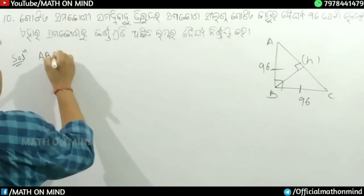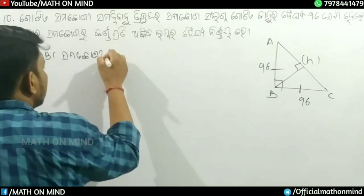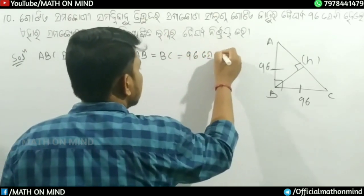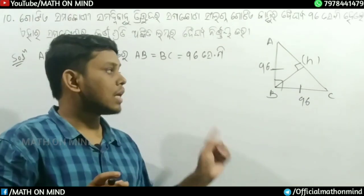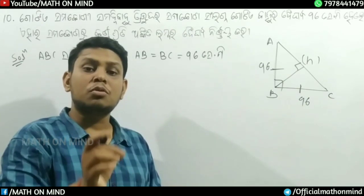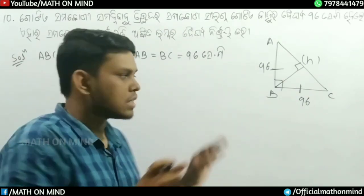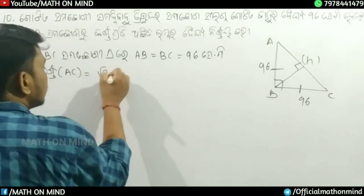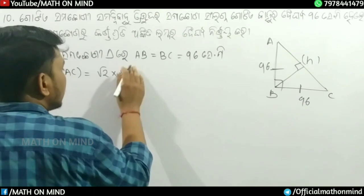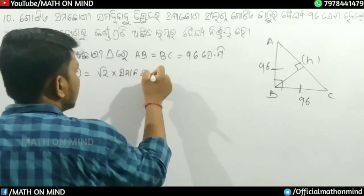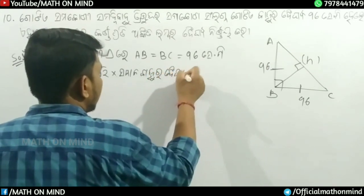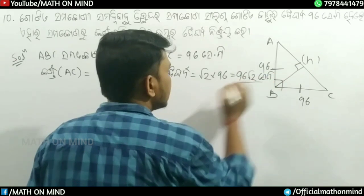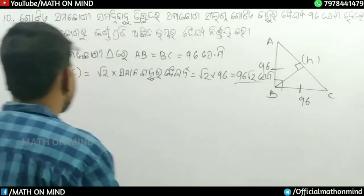In triangle ABC, the perimeter is equal to 96 centimeters. We're given that AB equals BC equals 96. One side measurement involves root 2. The relationship is: root 2 into the side length equals the perimeter value. So we have 96 root 2 centimeters for one measurement.